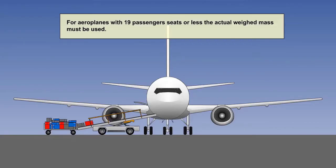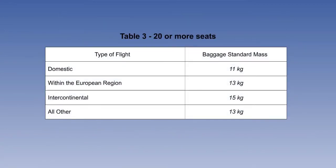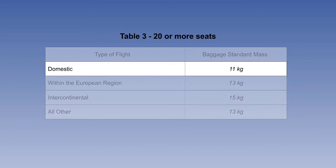The final part of mass values concerns the checked baggage masses, which are documented in Table 3 of EU Ops 1. It is important to note that for aeroplanes with 19 passenger seats or less, the checked baggage must be weighed. When the total is 20 seats or more, the standard masses in Table 3 can be used. Table 3 separates flights into 4 types. A domestic flight means a flight with origin and destination within the border of one state, and the baggage standard mass is 11 kilograms.